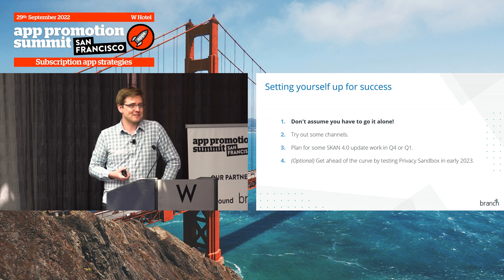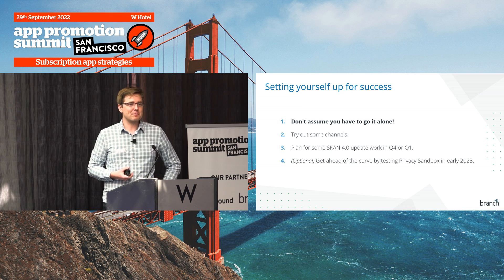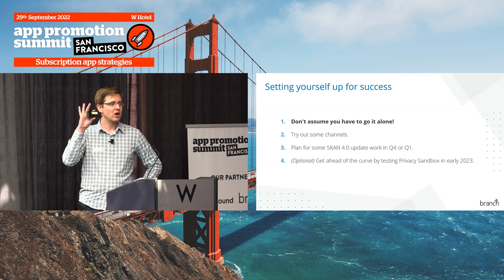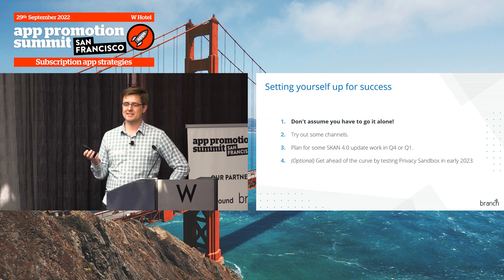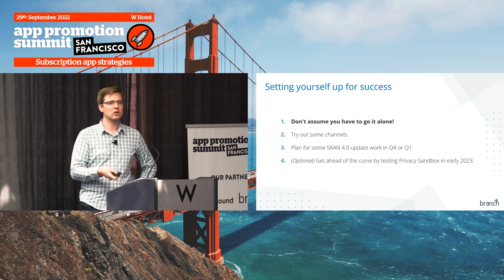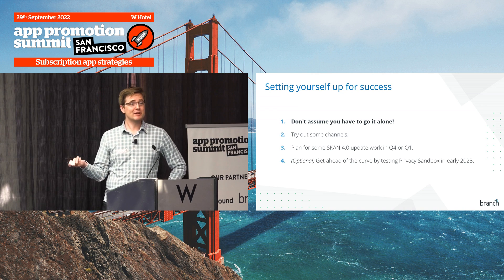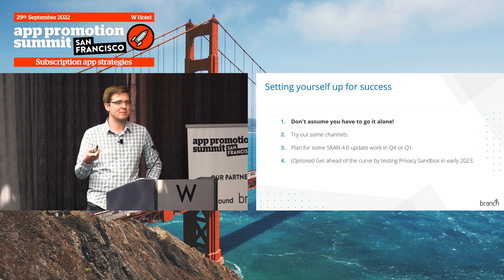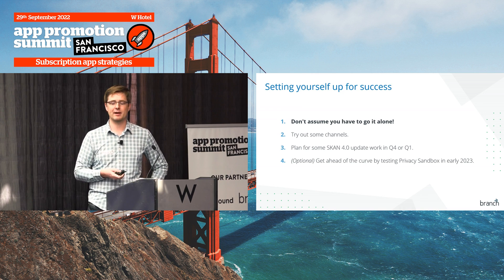It's also a good time to try out some new channels. Ads have been great and they're not going away, but owned and earned media has always been a good option and now is probably a good time to pay more attention to it. For timelines: my best guess for SKAN 4.0 is sometime later this year, end of Q4, possibly early Q1. Put a placeholder in your engineering roadmap — there'll be a little bit of work to do. And if you want to get ahead of the curve, you can test Privacy Sandbox early in 2023, as the infrastructure is being built right now.